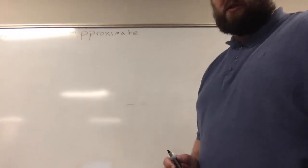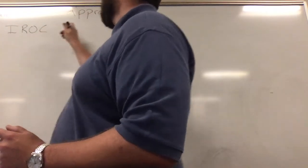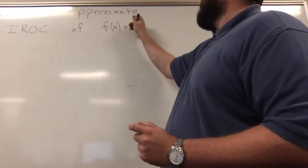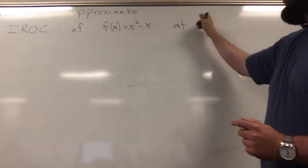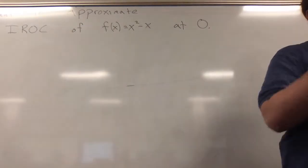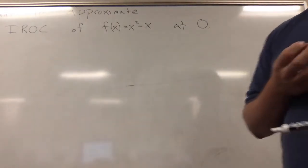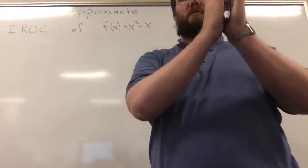We're trying to approximate the instantaneous rate of change of f(x) = x² - x at 0. The conceptual thing here is the instantaneous rate of change can be approximated by average rate of change over smaller and smaller intervals.